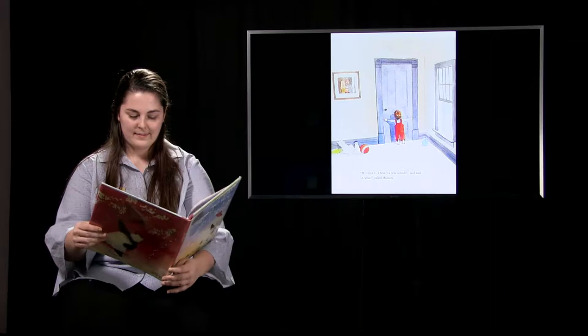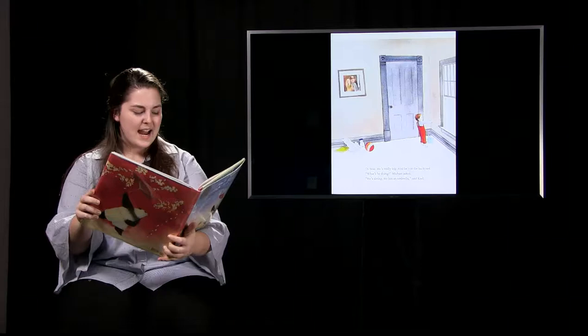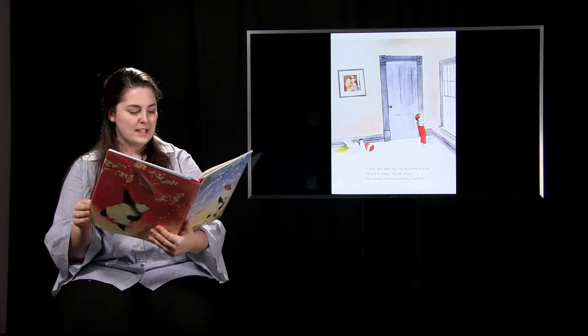Michael, there's a bear outside, said Carl. A what? called Michael. A bear! He's really big and he's in the backyard. What's he doing? Michael asked. He's sitting. He has an umbrella, said Carl. An umbrella?